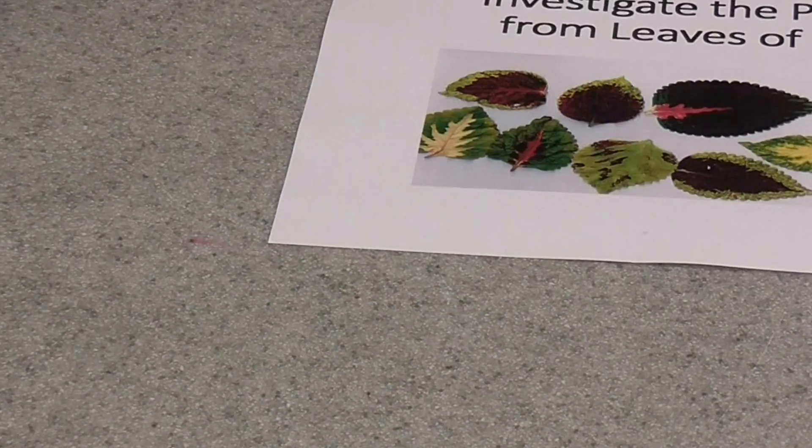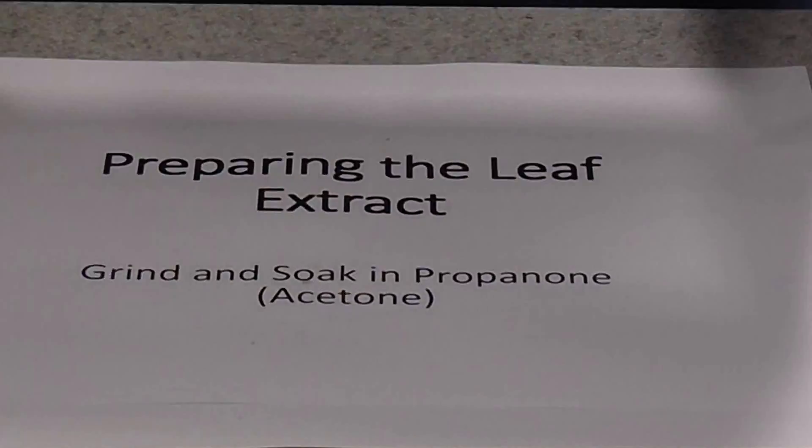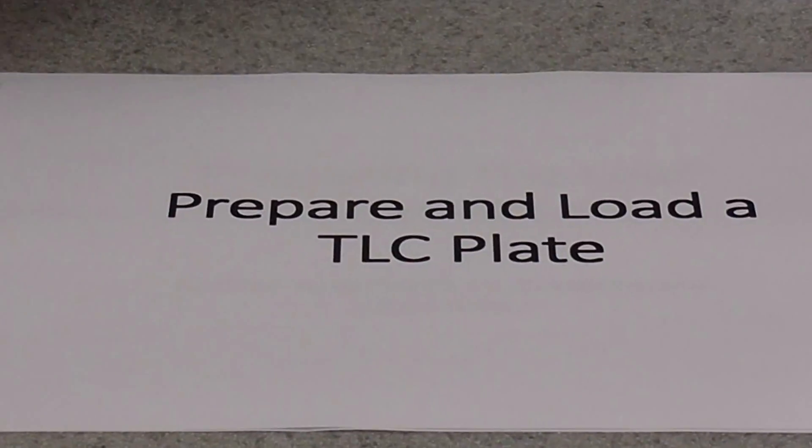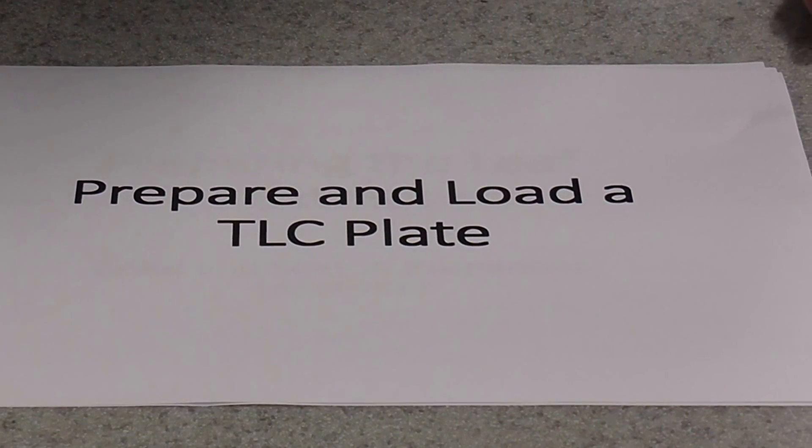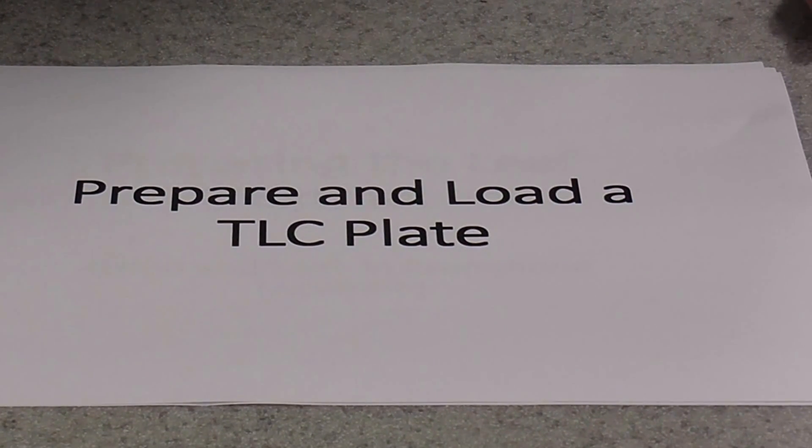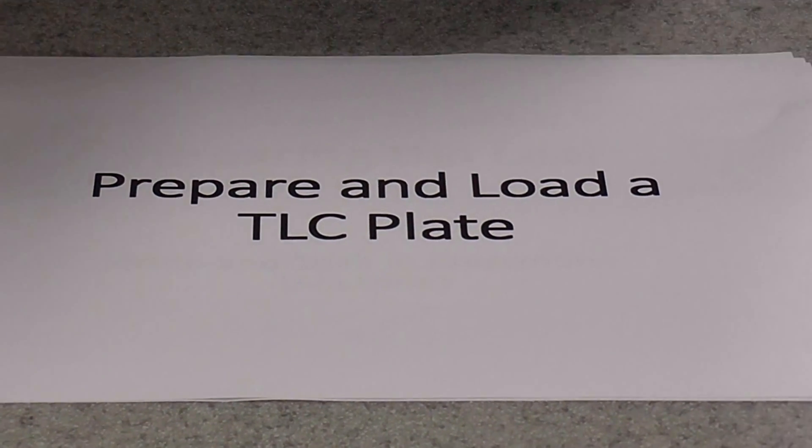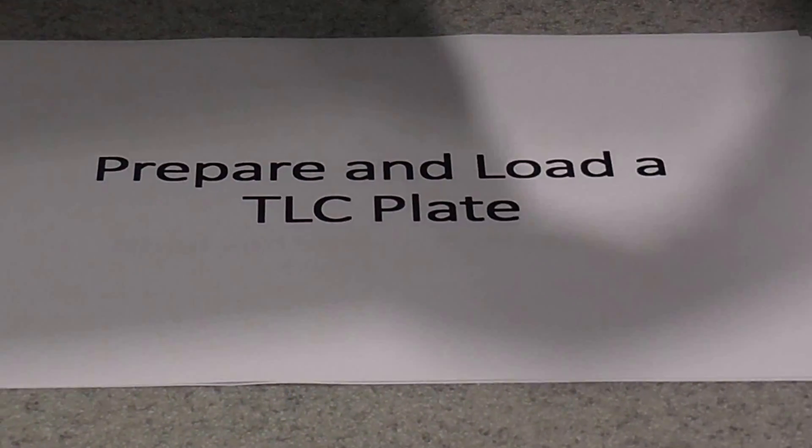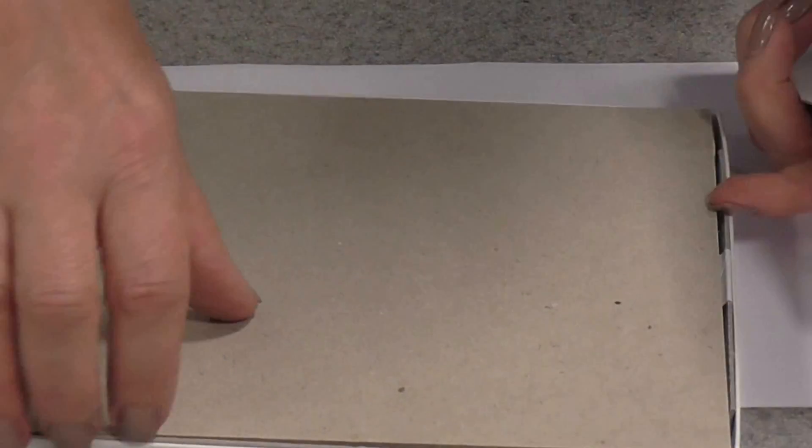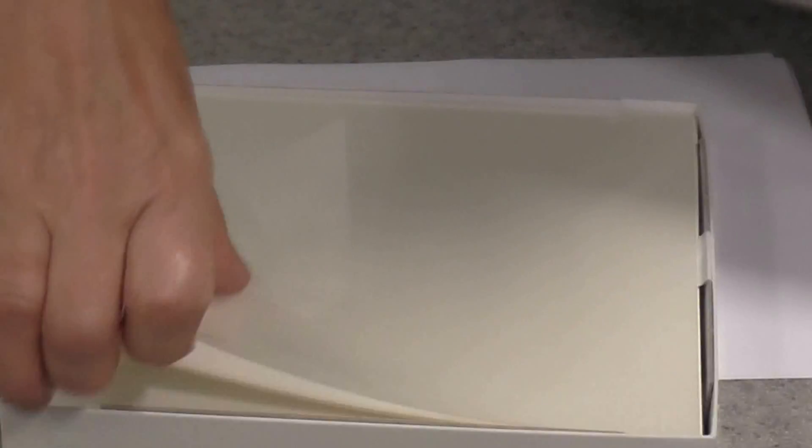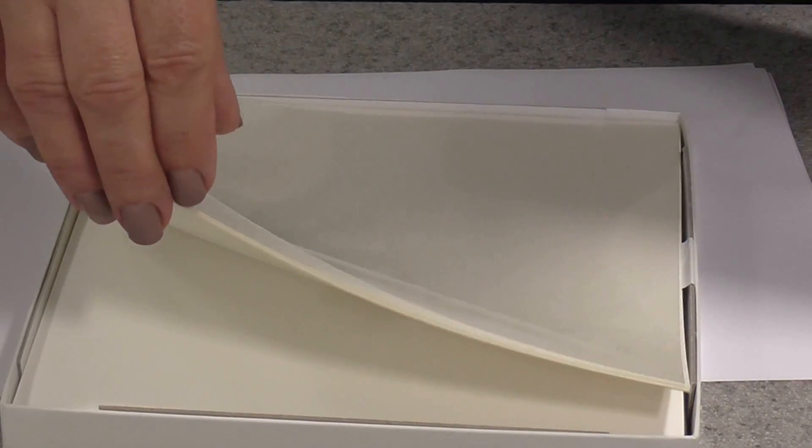Now, the next thing you are going to do is you're going to prepare and load a TLC plate. You can use chromatography paper if you like. It doesn't work quite as well, but it does work. Now, a TLC plate is actually a sheet, you can buy them in boxes, small sheets of plastic coated in a silica gel. And that can be the stationary phase used in chromatography.